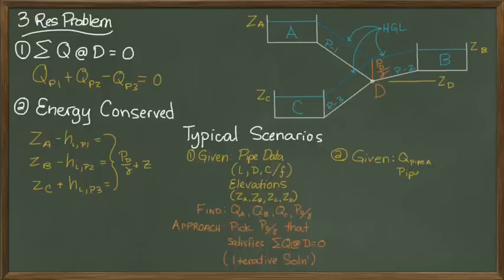Another scenario is the flow rate from one of the reservoirs is known, along with the pipe data and elevations as well. Here the task would be to find the flow rate to or from either of the other reservoirs.